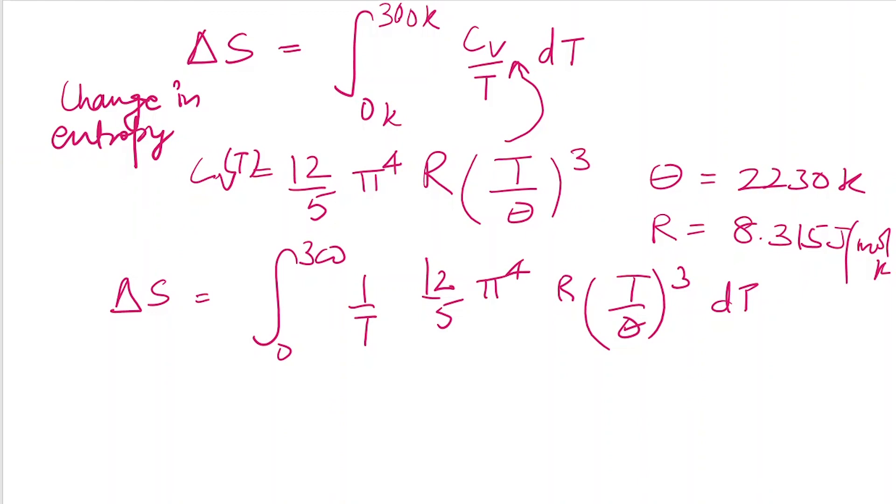We can cancel this T with that T. We can take out all the constants: (12/5)π⁴R is constant, Θ is also constant. So we get ∫₀³⁰⁰ T² dT, because T³ in numerator divided by T gives T². It's a simple integration.